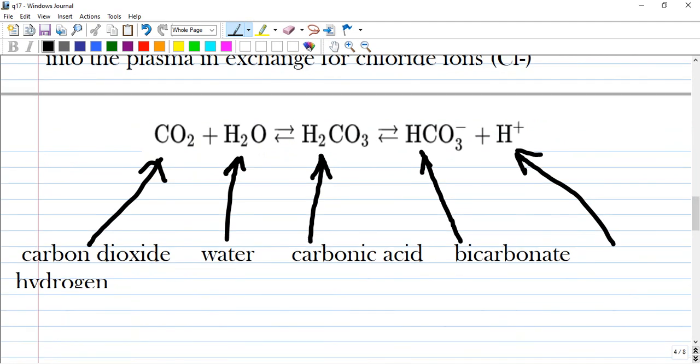All of these reactions occur in different directions so carbonic acid can go to the bicarbonate hydrogen and go to the left in the water and carbon dioxide.